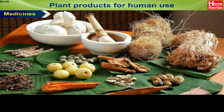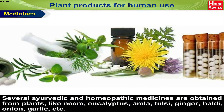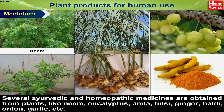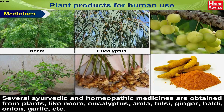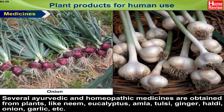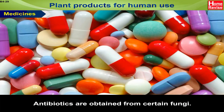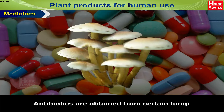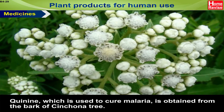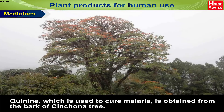Medicines: Several Ayurvedic and Homeopathic medicines are obtained from plants like Eucalyptus, Amla, Tulsi, Ginger, Haldi, Onion, Garlic, etc. Antibiotics are obtained from certain fungi. Quinine, which is used to cure malaria, is obtained from the bark of the Cinchona tree.